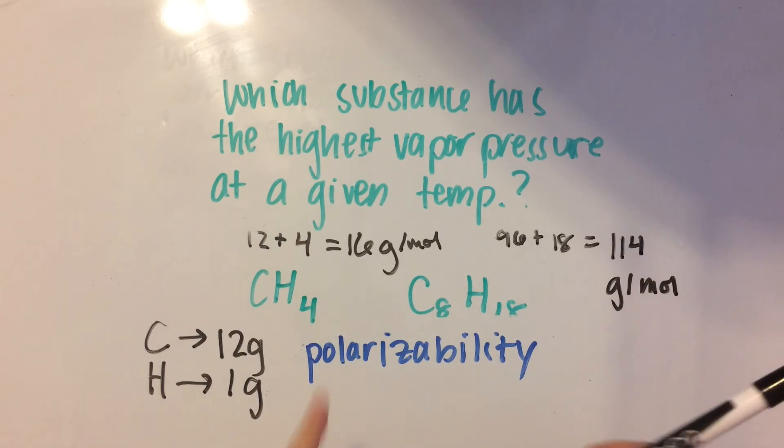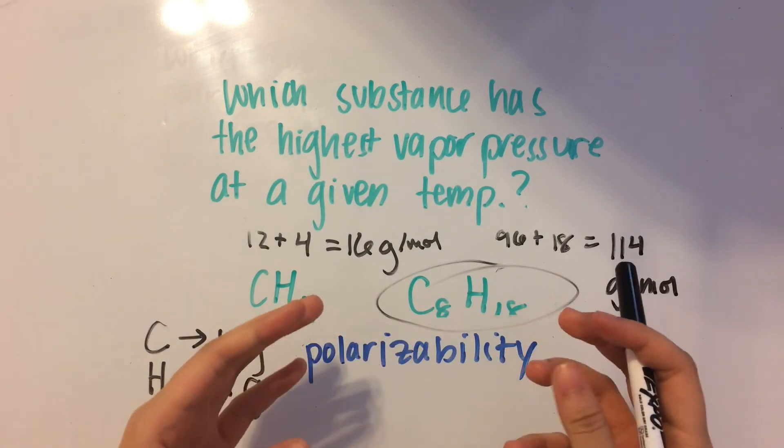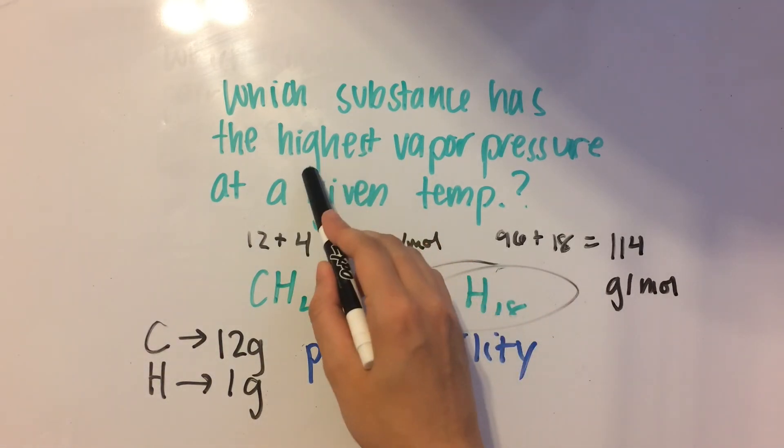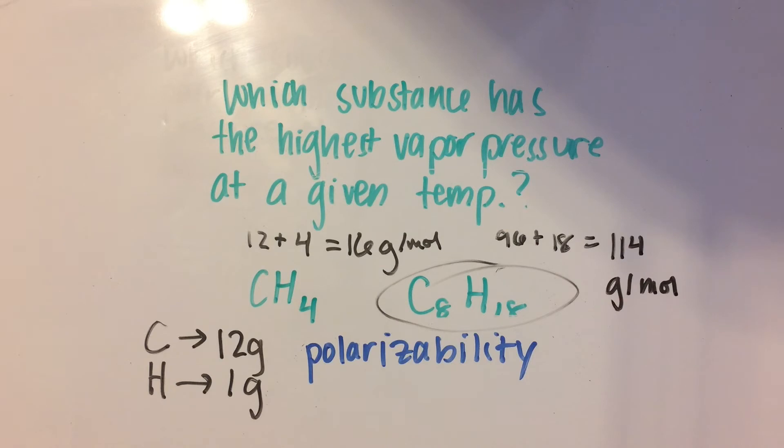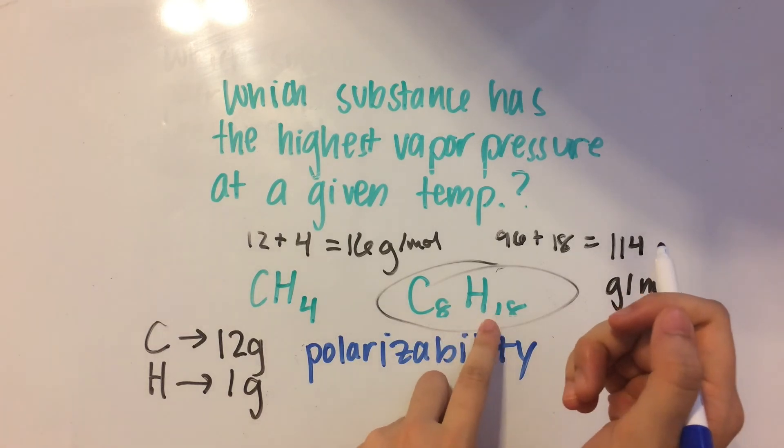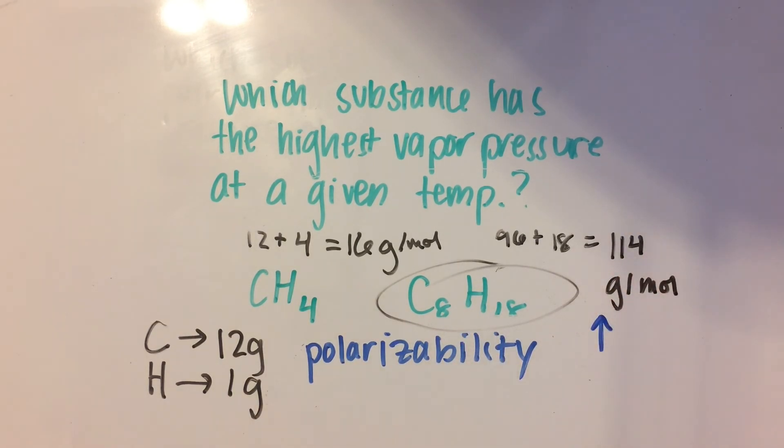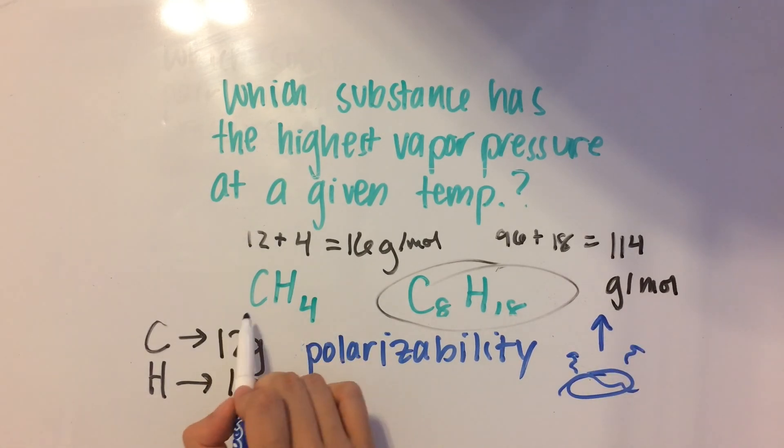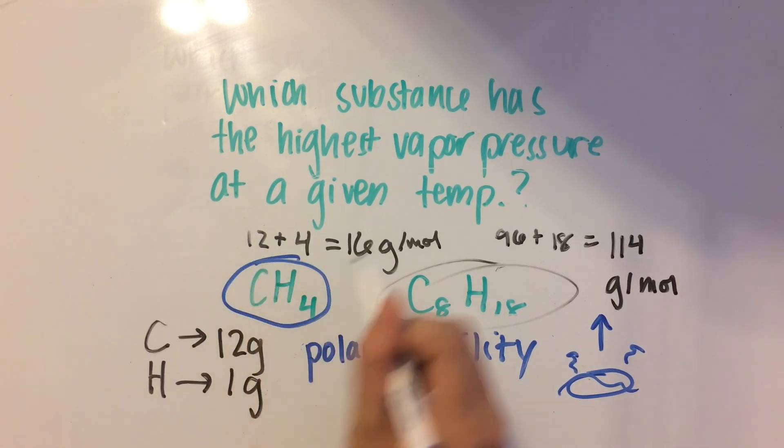So now obviously C8H18 has a much larger molar mass than CH4. So we say that C8H18 has a higher polarizability and thus has greater attractive forces between its molecules. But it's asking us for which substance has the highest vapor pressure at a given temperature. So since C8H18 has higher attractive forces, the molecules are going to want to stay together down in the liquid phase rather than escaping out into the open air. So since CH4 has lower attractive forces, it's going to be the one with the highest vapor pressure.